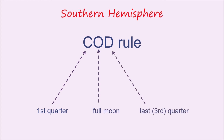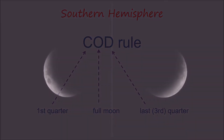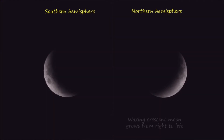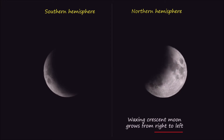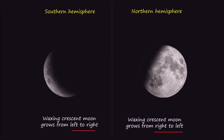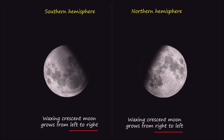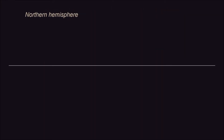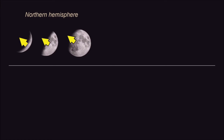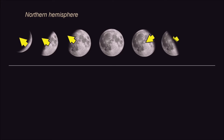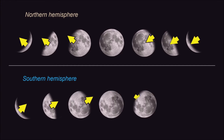Direction of growing and diminishing moon: Are you in Canada? You see the moon is growing from right to left. Then travel to South Africa — you will see it's growing from left to right.